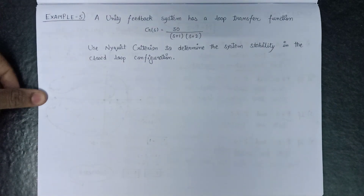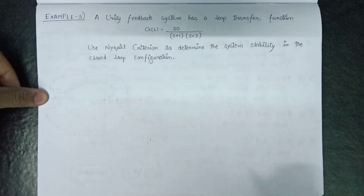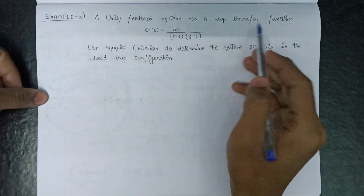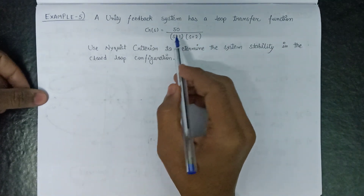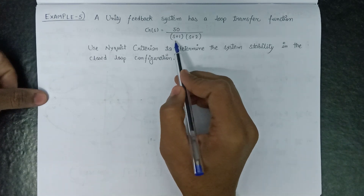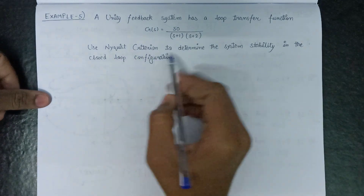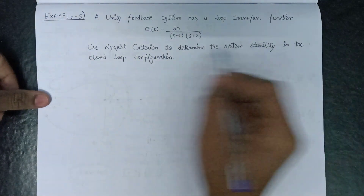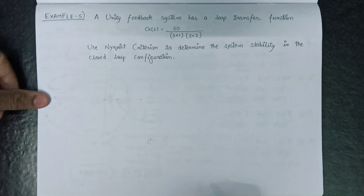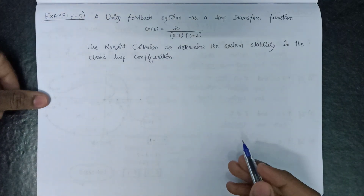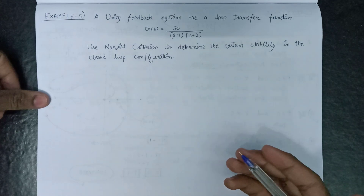Welcome all. In this lecture we are going to solve an example based on Nyquist criteria. In this question, a unity feedback system has an open loop transfer function given as G equals 50 over (s+1)(s+2). We need to use the Nyquist criteria to determine the system stability in the closed loop configuration. We will follow all 5 steps discussed in the previous lecture to plot the Nyquist plot and then check whether our system is stable or not.